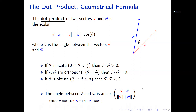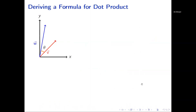All of this comes from the geometric definition and has applications, but now I need to actually compute the dot product. I'm going to derive a formula for it. Let's say we have vectors v and w — the dot product gives a scalar, and theta is the angle between them. I can use the polar angles of the terminal points of v and w to draw some conclusions.